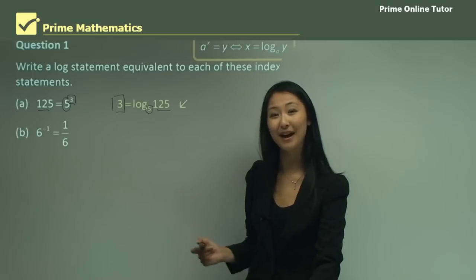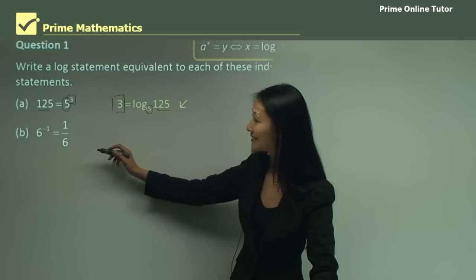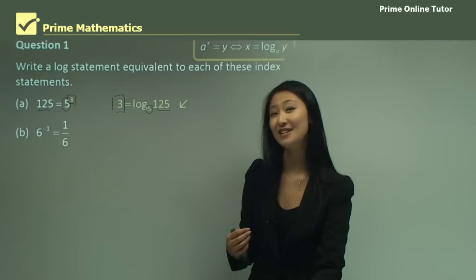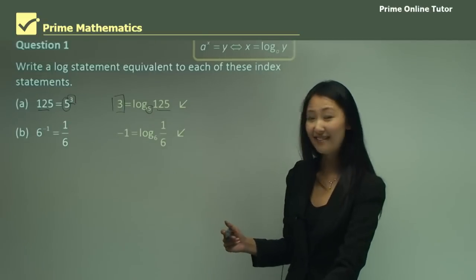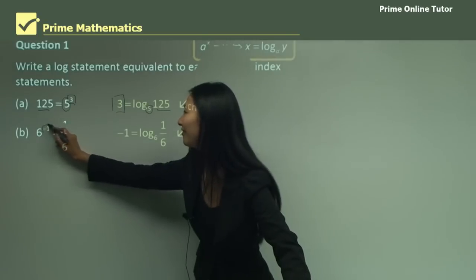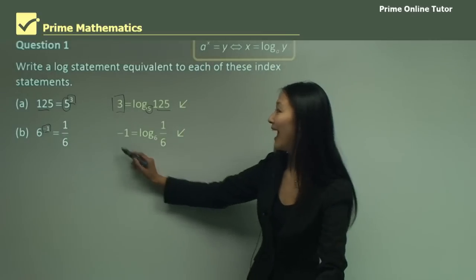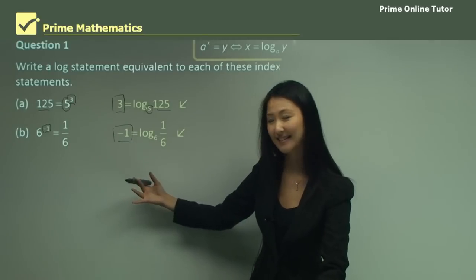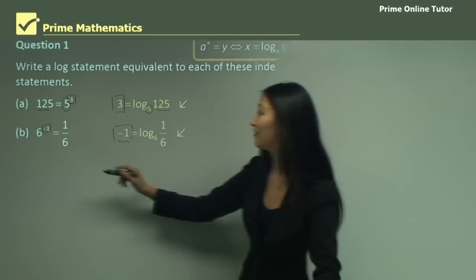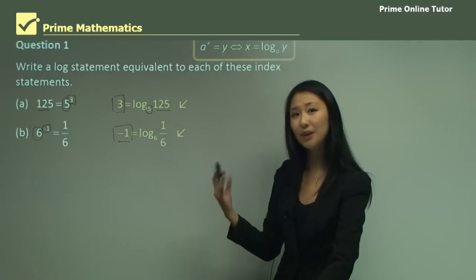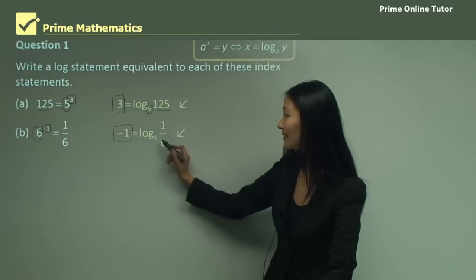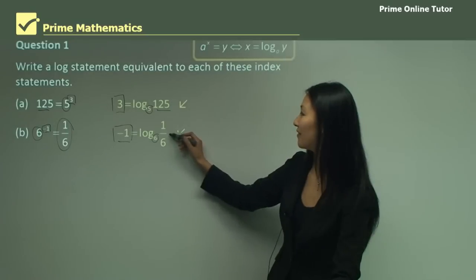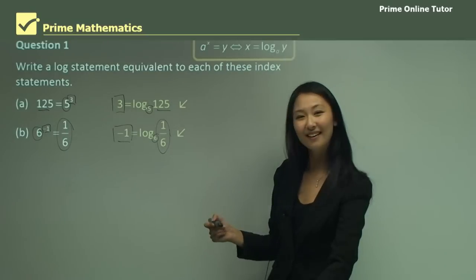Here we have 6 to the power of minus 1 equals 1 on 6. It looks a little different since we're working with fractions, but the principles are the same. The index, minus 1, moves over here. The base of the index is 6, so that becomes the base of the logarithm. And finally, 1 on 6 moves over here.